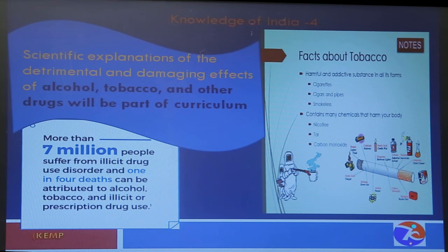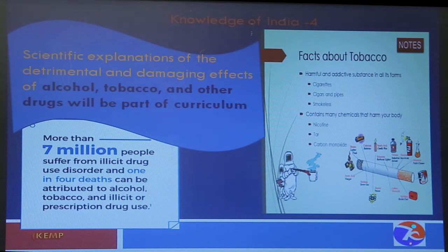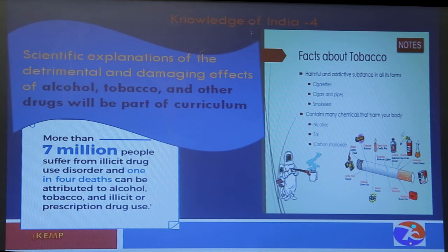We also need to address bad habits in society. Scientific explanations of the determinants and damaging effects of alcohol, tobacco, and other drugs will be part of the curriculum. We need to tell students what is good and what is bad with real examples. Over seven million people suffer from illicit drug use disorders, and one in four deaths can be attributed to alcohol and tobacco. Students should know what is good and what is bad. Thank you very much.